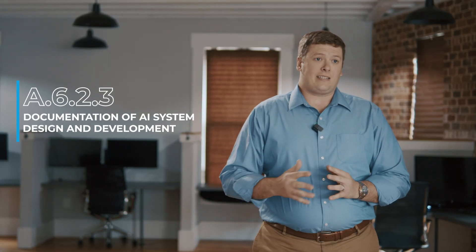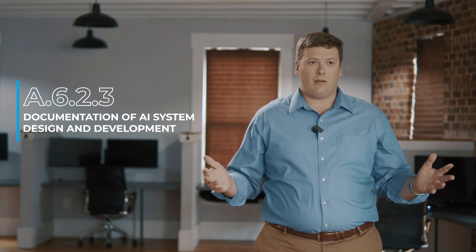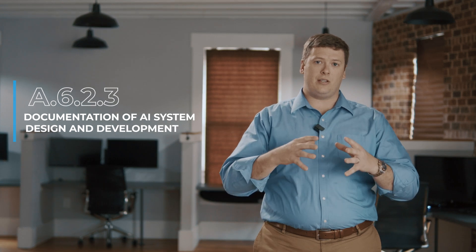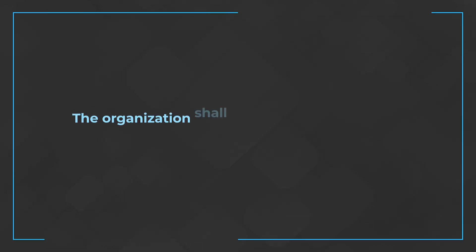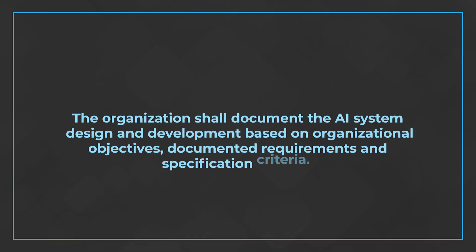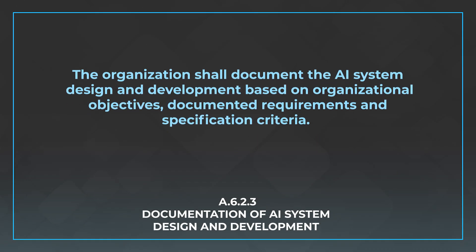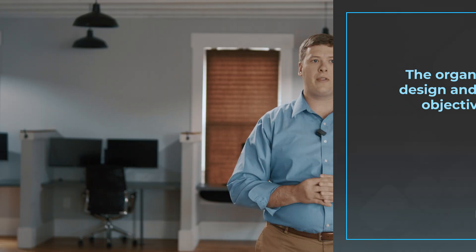The next is A.6.2.3, documentation of AI system design and development. This is about creating the packet of documentation that pertains to the design and development of AI systems. The organization shall document the AI system design and development based on organizational objectives, documented requirements, and specification criteria — essentially an SDLC but created specifically for AI systems.